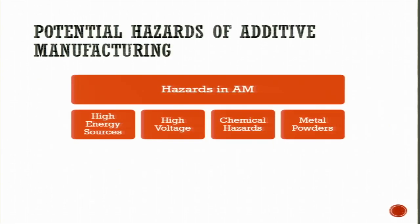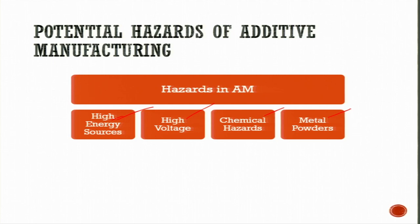The hazards in additive manufacturing could come through high energy sources, high voltages, chemical hazards, and metal powders. High energy sources might be lasers; high voltages relate to electrical supply; chemicals are due to gases; and metal powders may be hazardous to the skin or eyes, or might be inhaled while breathing. Components such as the high energy source, heating source, deposition head, material feeding system, workstation, beam manipulation system could all adversely affect the health of persons working around them.